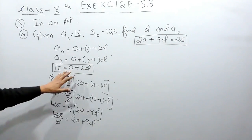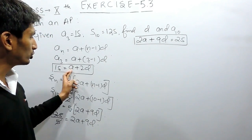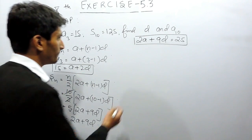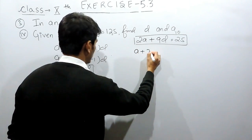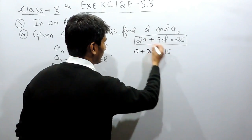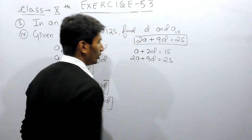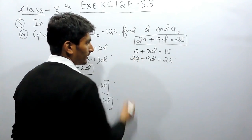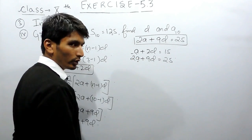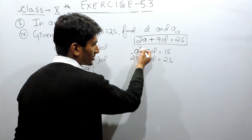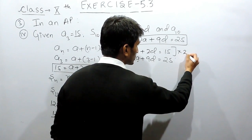We now have two equations: equation 1 is a + 2d = 15, and equation 2 is 2a + 9d = 25. To solve these, we need to equate the coefficients of a, so we multiply the first equation by 2.